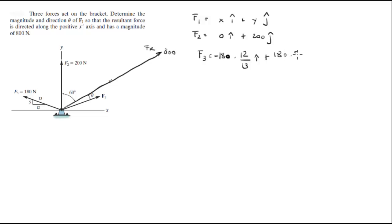Plus 180 times 5 over 13j. When you solve this you get negative 166.15i and the other one is 69.23j.